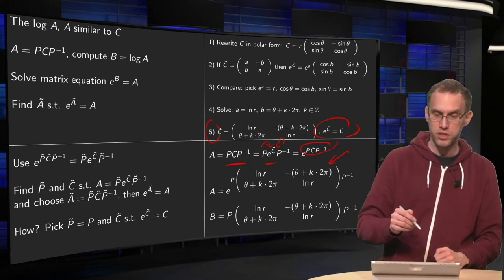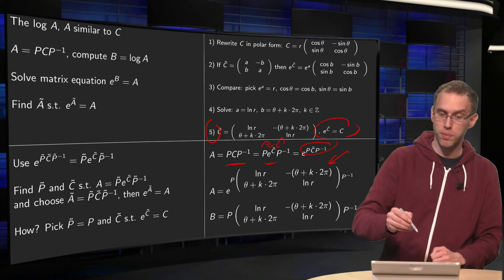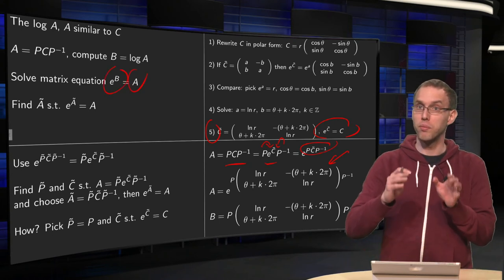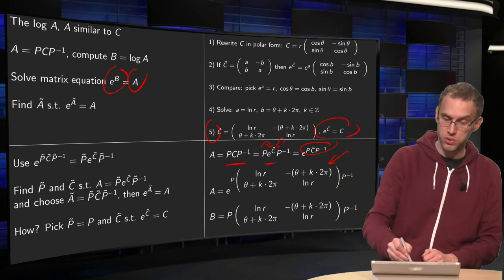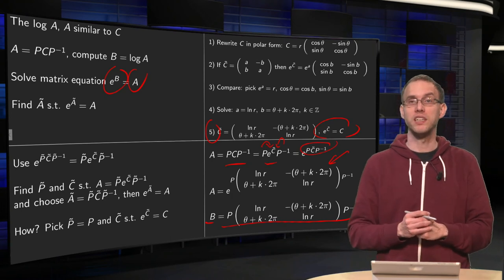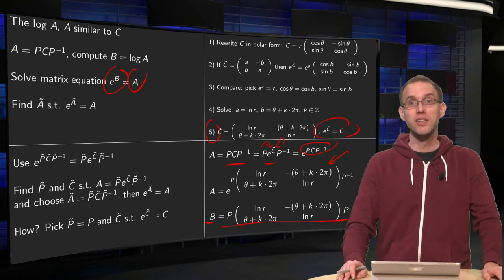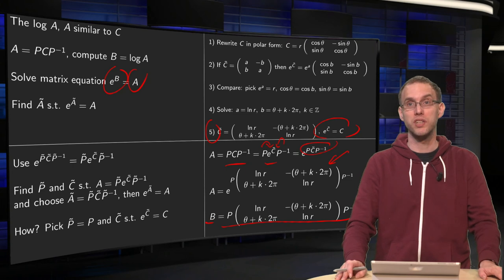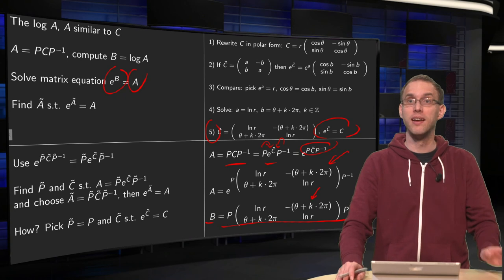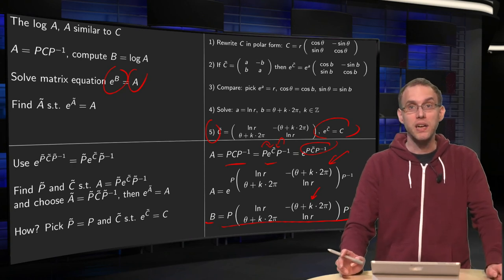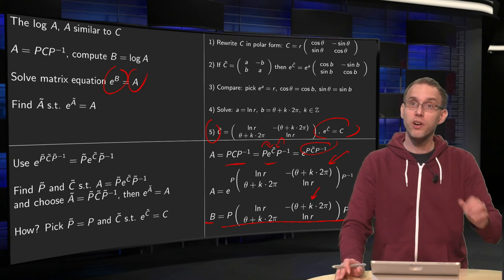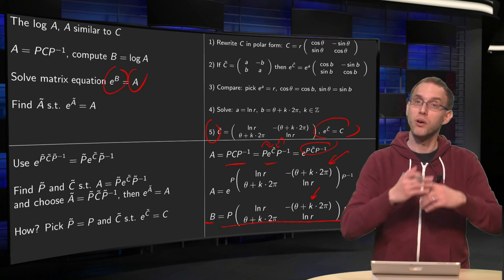Now you compare exponents, you wanted to solve e to the power of B equals A, which is now written in the form of e to the power of something. So comparing exponents you see that B can be equal to that matrix. So actually you see if you now compute the log of a scaling rotation matrix, you do not have one log, but you have many logs, infinitely many. And if you have done complex analysis, this feature of a log may remind you of the logarithm of complex numbers which show a similar property.